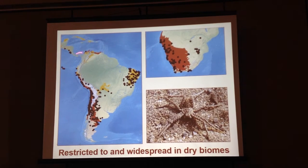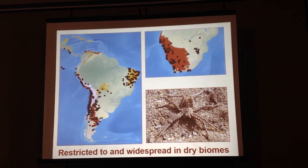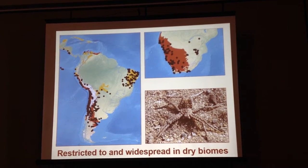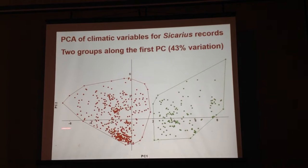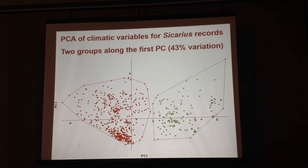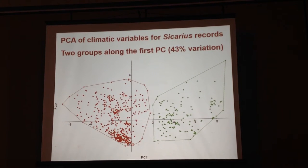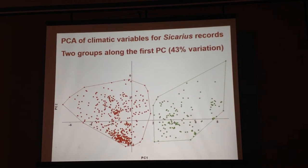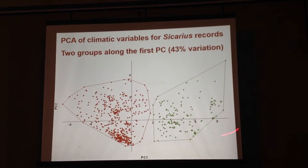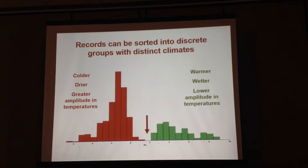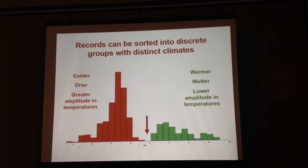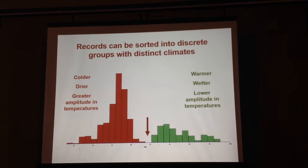These are all the records for Sicarius spiders that I know. If you take the climatic variables associated with each of these records and make a principal component analysis of them, you get this. Here you have the two principal components of climatic variation, and in the first principal component, which accounts for 43% of the climatic variation in the genus, we can observe two groups. If we take the values of this first principal component and make a histogram, we can see that the records can be sorted into two discrete groups with distinct climates.